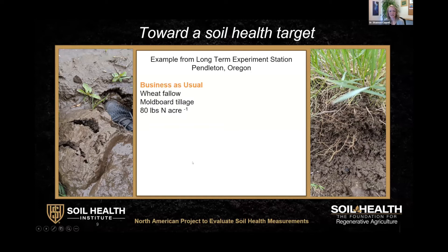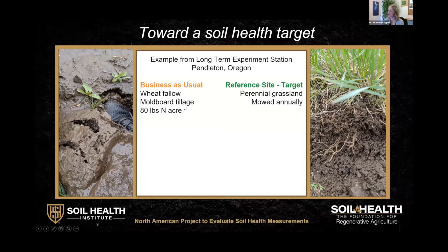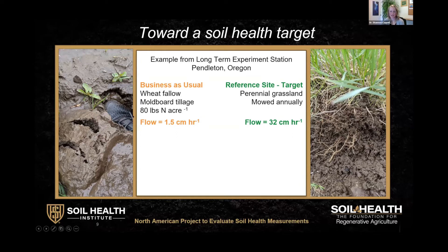Our site in Pendleton, Oregon gave us a really nice example of this. The soil pictured on the left is from a system where a moldboard plow has come through every year for the last 80 years, worked in a typical wheat-fallow rotation. At the same experiment station, there's also a baseline grassland that gets mowed once or twice a year, and that's all. These two pictures were taken on the same day after a hard rain. Our lab and field measurements showed these beautiful aggregates and root structure — significantly more water was allowed to flow in and through the system in the target soil: 32 centimeters per hour compared to 1.5 centimeters per hour in business as usual.